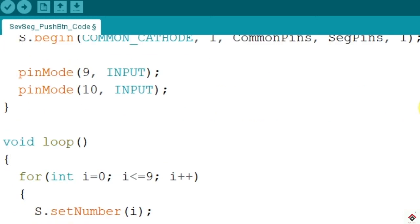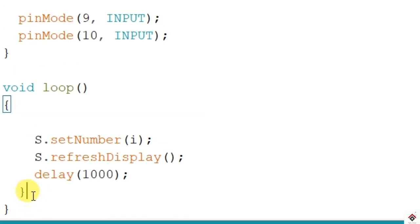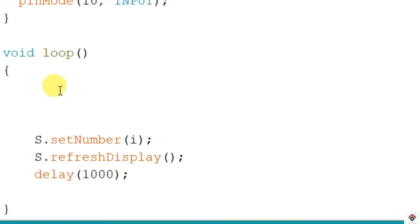And in the loop, I'll be removing this for loop. So these are the lines to print any number or character on the display. Anyway, we will need this at the end.